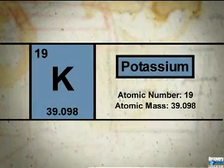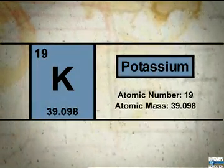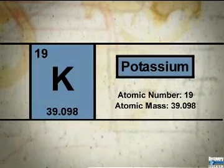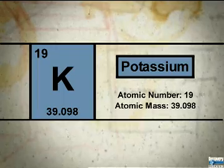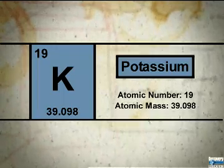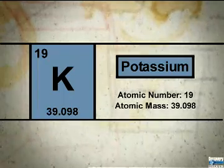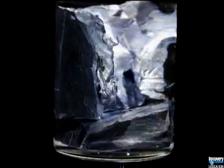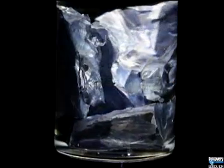Element number 19 on the periodic table is potassium. The atomic symbol for potassium is K. Potassium is a very soft, waxy, shiny metal with a slight purple hue that is caused by oxidation.